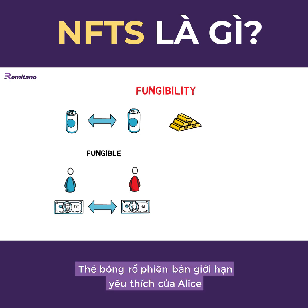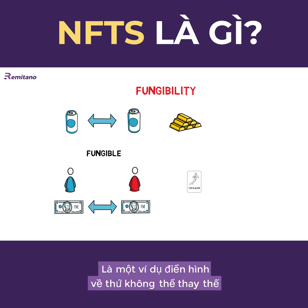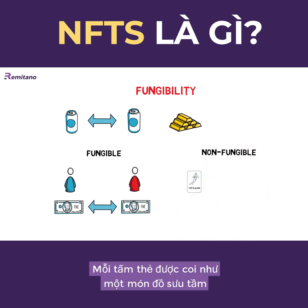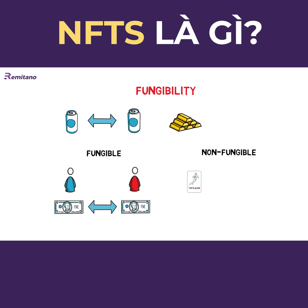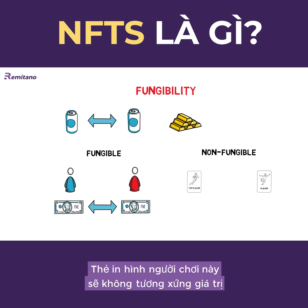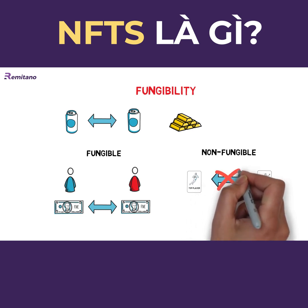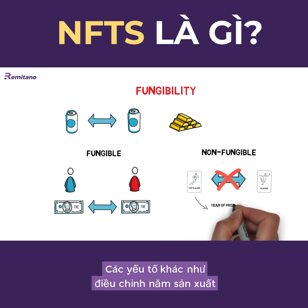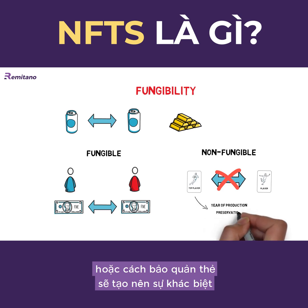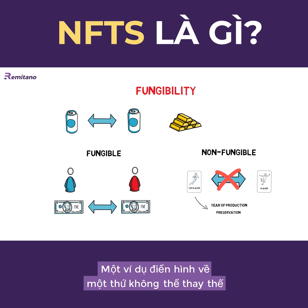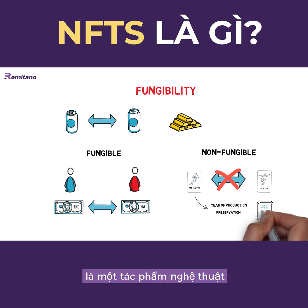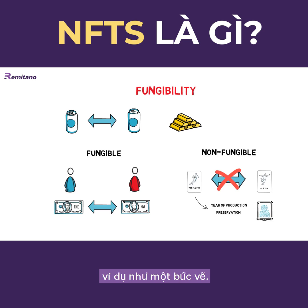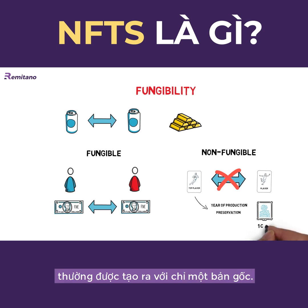On the other hand, Alice's favourite limited edition basketball card is a good example of something non-fungible. Each card is treated as a collectible and has individual properties. A card with one player doesn't usually have the same value as a card with another player. On top of that, even when considering two exactly the same cards, other factors such as the year of production or how the card is preserved can make a difference. An extreme example of something non-fungible is a piece of art — a painting, for example, is usually created as only one original copy.